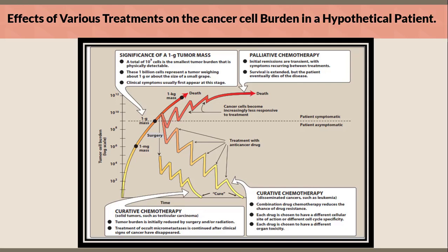We're going to demonstrate this slide — the effects of various treatments on cancer cell burden in a hypothetical patient. The vertical axis shows tumor cell burden on a log scale, and the horizontal axis is the time scale. The cancer starts at a 1 mg mass, asymptomatic. When the cancer reaches about 1 g, symptoms begin to appear. A 1 g tumor mass equals 10 to the power of 9 cells — the smallest tumor burden that is physically detectable — representing a tumor weighing about 1 g, roughly the size of a small grape.